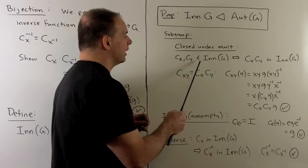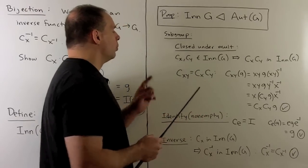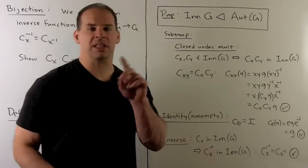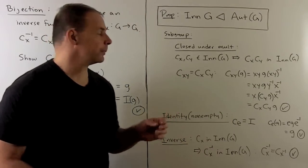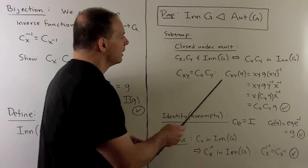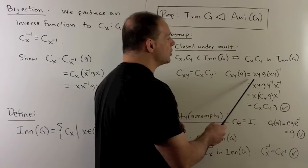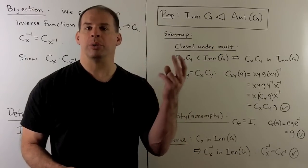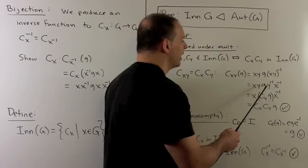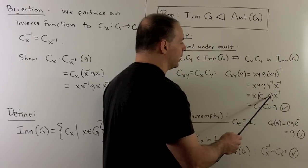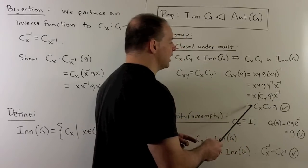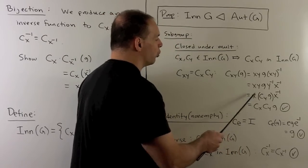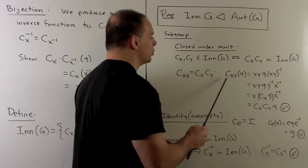Taking two elements c_x and c_y in Inn(G), we want to show c_x times c_y is also in Inn(G) — specifically that it equals c_{xy}. Check: c_{xy}(g) = xyg(xy)⁻¹ = xy·g·y⁻¹x⁻¹. On the inside we have c_y applied to g, then c_x applied to that. So c_x ∘ c_y = c_{xy}, which is an inner automorphism.